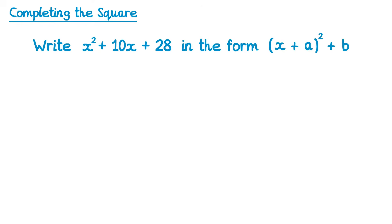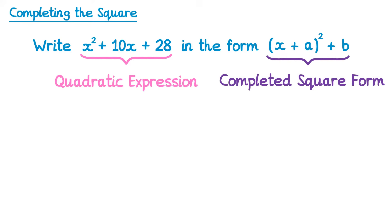In this video we're going to learn how to complete the square. Here we have a quadratic expression, and we're asked to write it in the form x plus a all squared plus b. This is known as the completed square form.